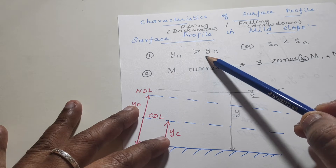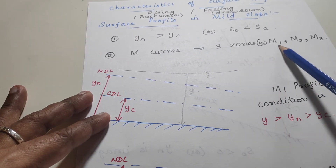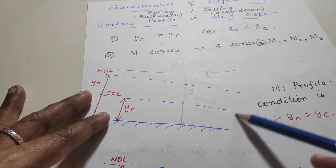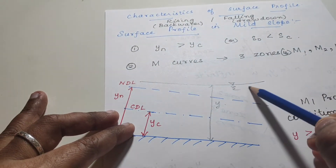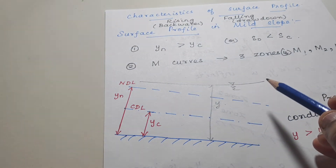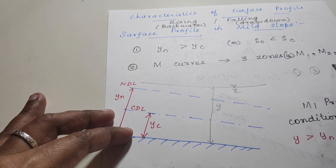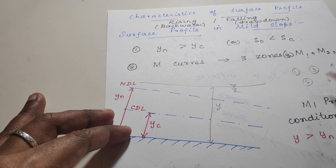In a mild slope channel, the normal depth is greater than the critical depth. We have M-curves in three zones: M1, M2, and M3. For zone 1 and zone 3, the profile is rising — meaning depth increases. For zone 2, the profile is falling — meaning depth decreases.